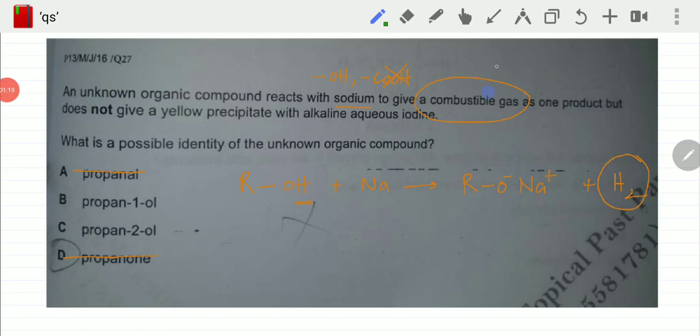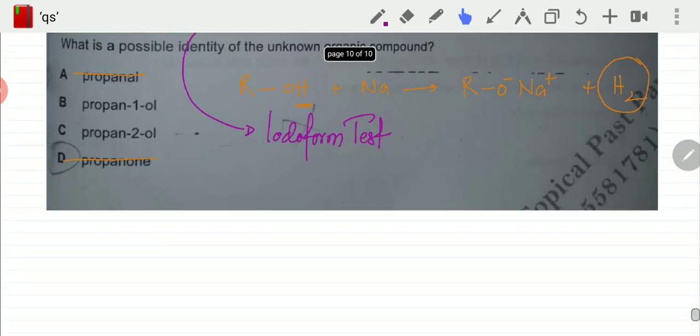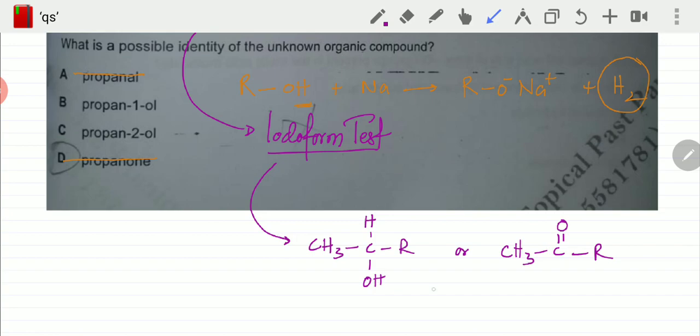Now the remaining part of the question states that it does not give a yellow precipitate with alkaline aqueous iodine. This reaction is known as the iodoform test. The iodoform test is positive—it gives a yellow precipitate with two specific structures.